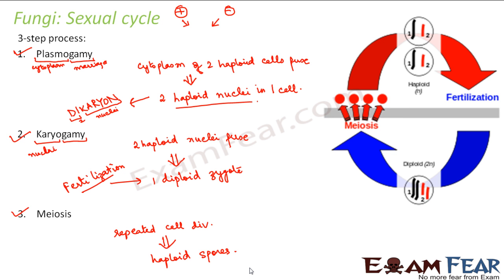Looking at the diagram: you have two haploid cells, one from plus and one from minus. These two cells first undergo plasmogamy — they combine together — then karyogamy where fertilization takes place. A diploid zygote is formed, which undergoes meiosis to form haploid spores. These haploid spores give rise to new mycelium; some will be of one mating type and some of the other, and they will come together to fertilize again, repeating the cycle.